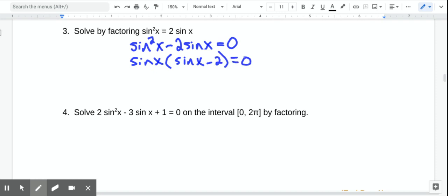And now that it's factored, since it's equal to 0, we're going to set both of these equal to 0. So either sine x equals 0 or sine x minus 2 equals 0.